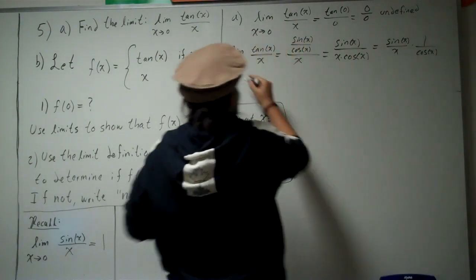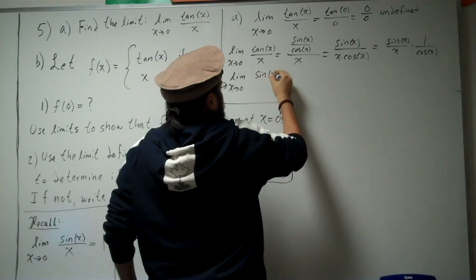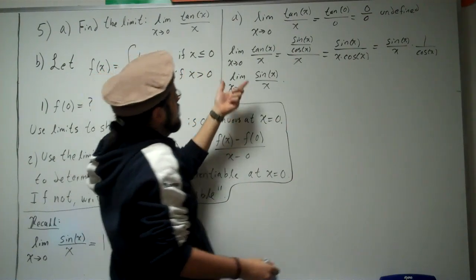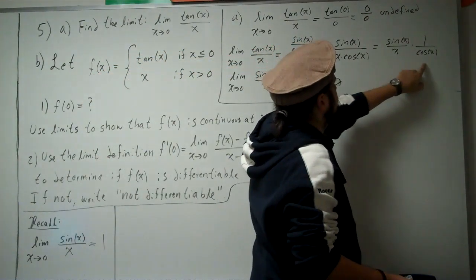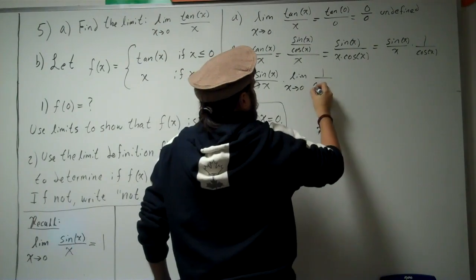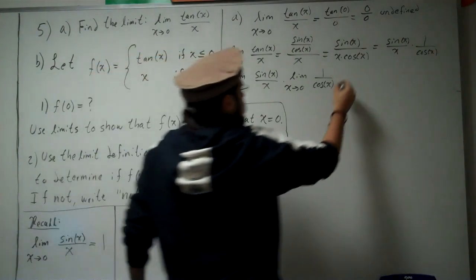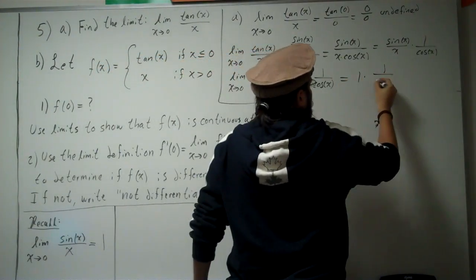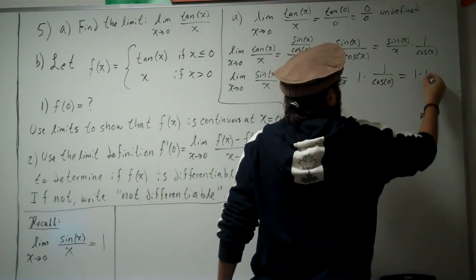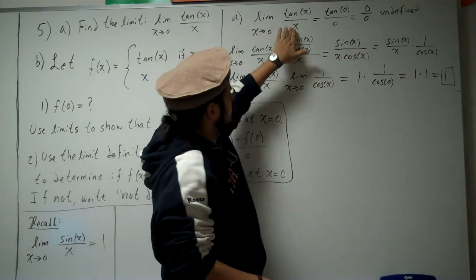Using the limit product rule — the limit of something times something equals the limit of each factor multiplied together — we already know the limit of sine x over x is 1. So we have 1 times the limit of 1 over cosine x. Since cosine of 0 is 1, that's 1 times 1, which equals 1. Therefore, the limit as x approaches 0 of tangent of x divided by x is 1.